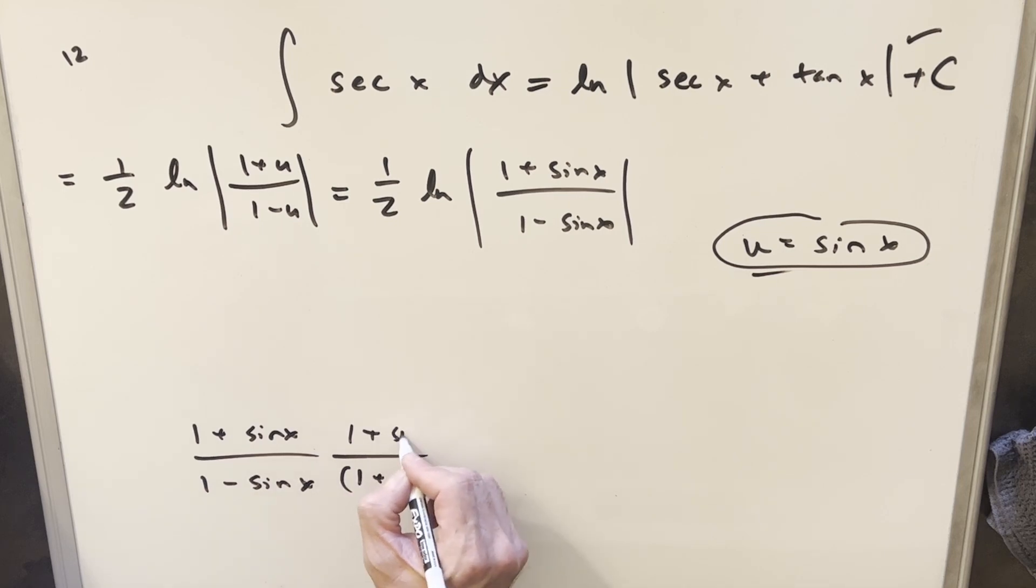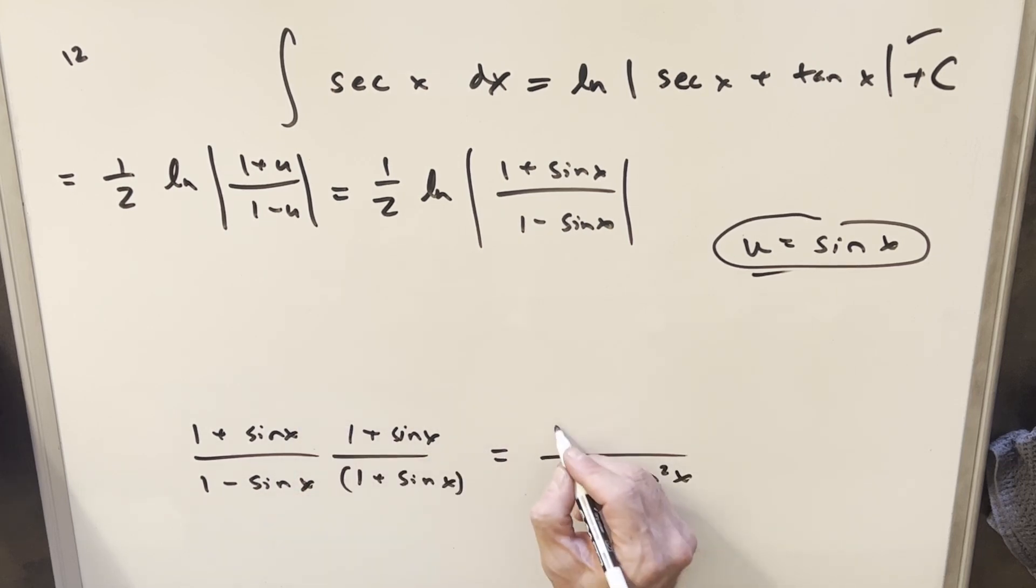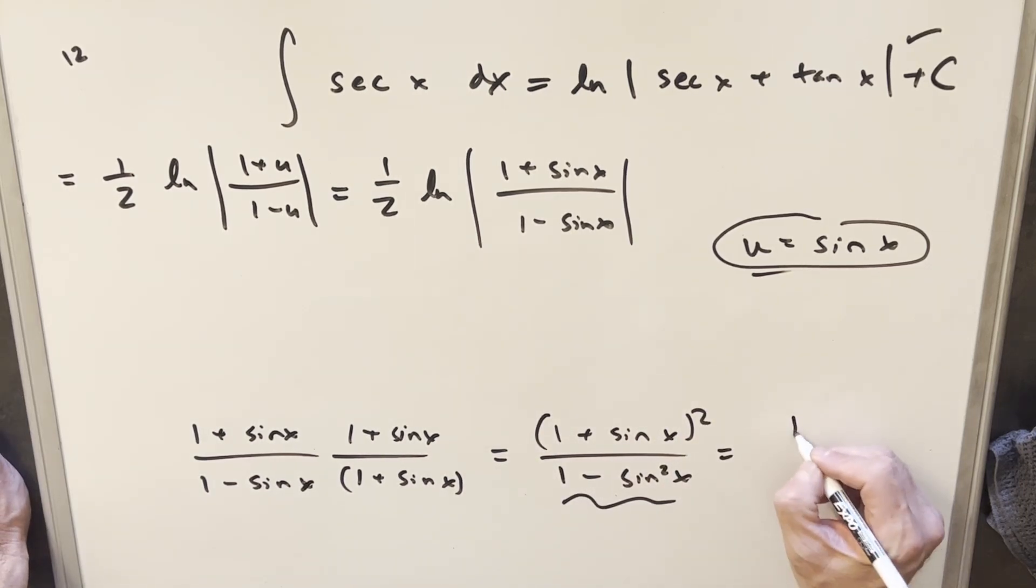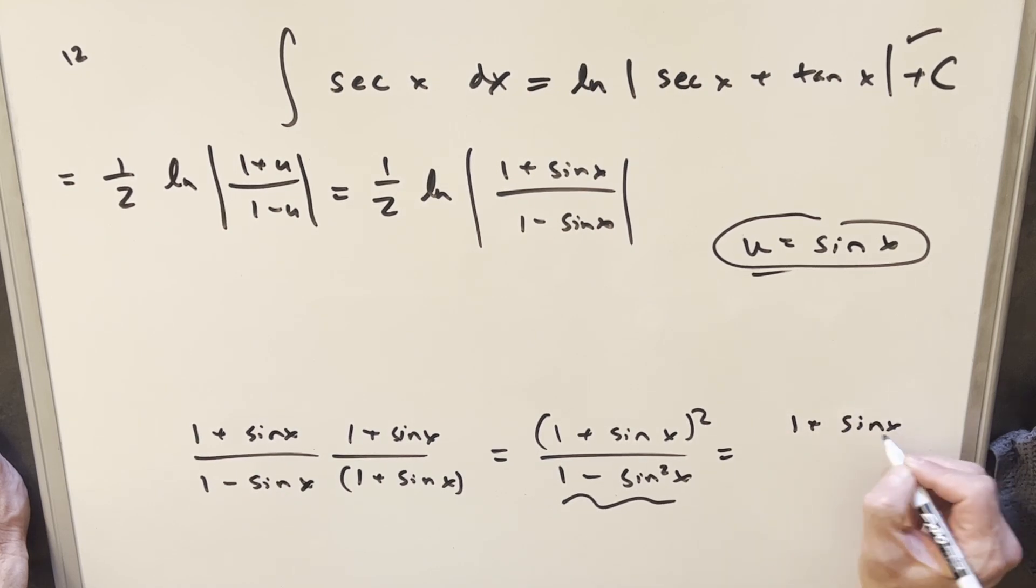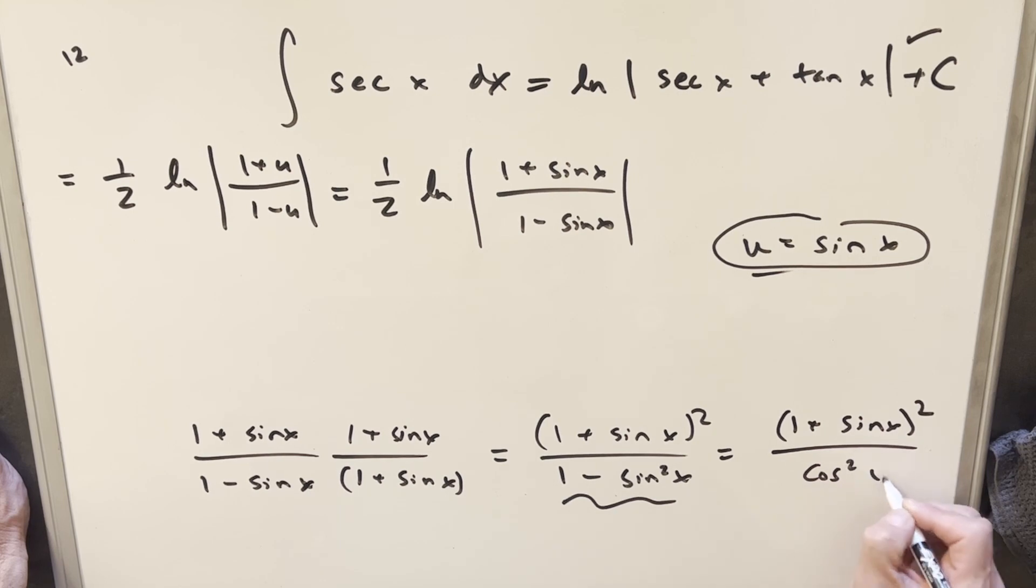Then when we do this we're gonna have in the denominator 1 minus sine squared x, and then in the numerator I'm gonna just leave this as 1 plus sine x squared. But this here of course is cosine squared, so again I'm gonna rewrite: we'll do 1 plus sine x squared here and then this is actually cosine squared x. So now I'm gonna take this and we'll plug this back in here.